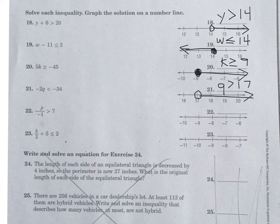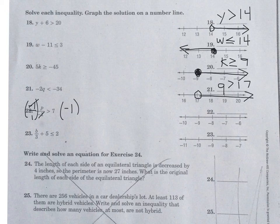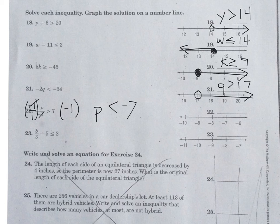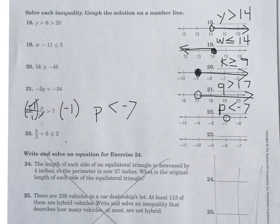For number 22, multiply by negative 1. Because you multiplied by a negative number, flip the sign, so p is less than negative 7. For the graph, put an open circle on negative 7 and point the arrow to the left, since p must be less than negative 7.